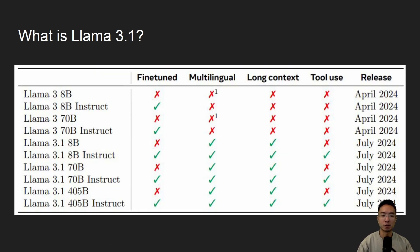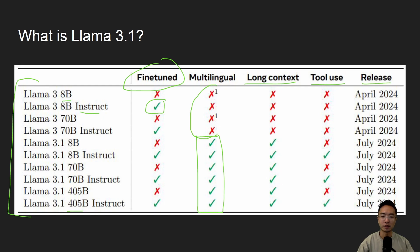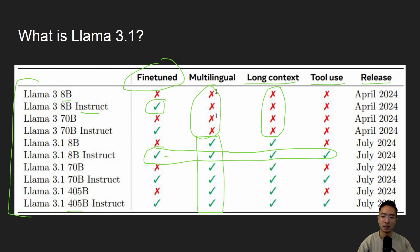These are the different models available in this table. We have different columns: fine-tuned, multilingual, long context, tool use, and release. On the far left are all the different model types. The numbers mean 8B as in 8 billion parameters, going all the way up to 405 billion. The ones with 'instruct' are the ones that have been fine-tuned. Some of the newer 3.1 models are multilingual whereas the older ones are not. The ones with instruct also have tool use, whereas the ones without instruct show X's.